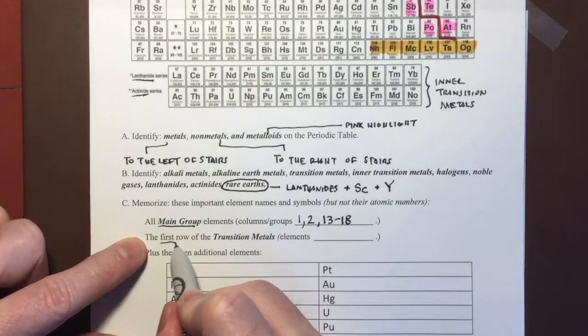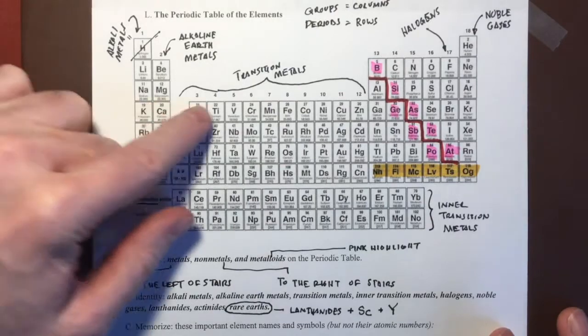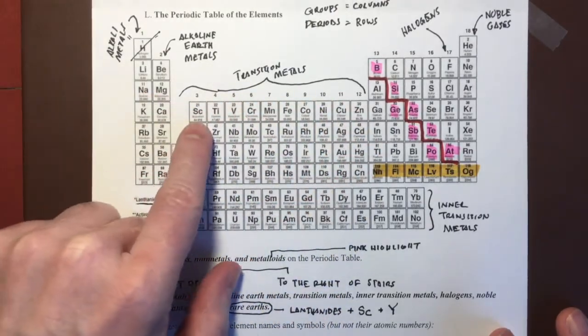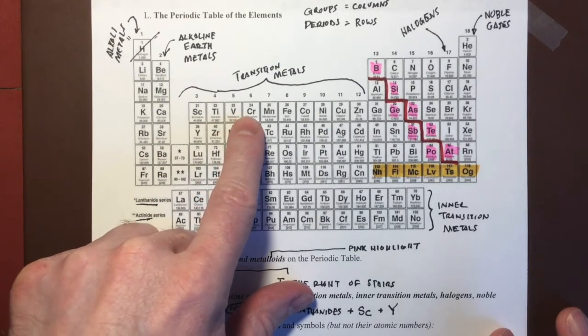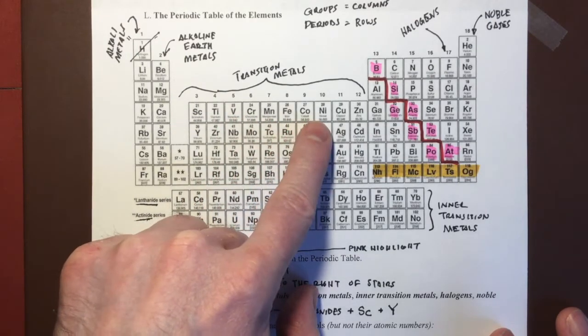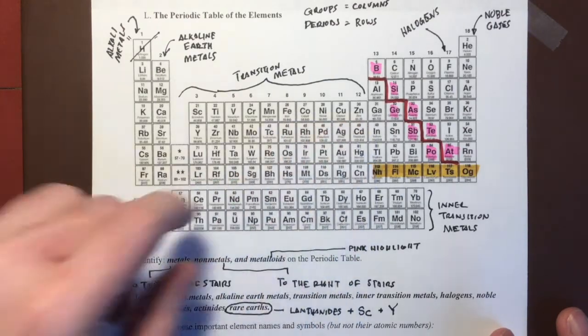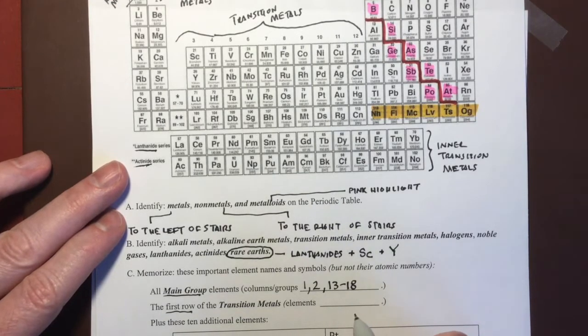In addition, I'm asking you to know the first row of the transition metals. This block is the transition metals, and I'm asking you to know the first row. So we have scandium, titanium, vanadium, chromium, manganese, iron, cobalt, nickel, copper, and zinc. Those are the first row, elements twenty-one through thirty.